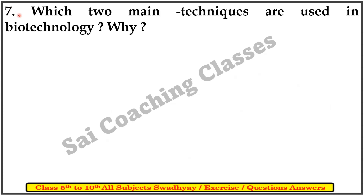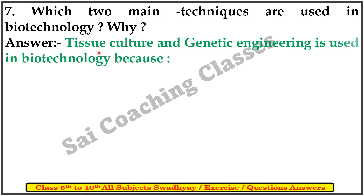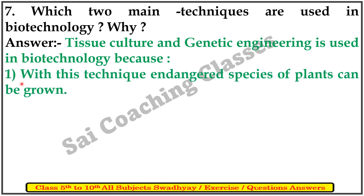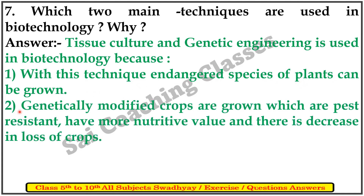Which two main techniques are used in biotechnology and why? Genetic engineering is used in biotechnology because with these techniques, endangered species of plants can be grown. Genetically modified crops are grown which have better resistance, more utility value, and there is a decrease in loss of crops. Plants grown by these techniques are disease-free and pest-free.